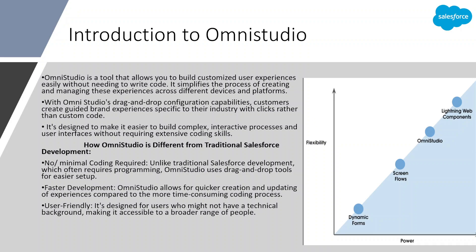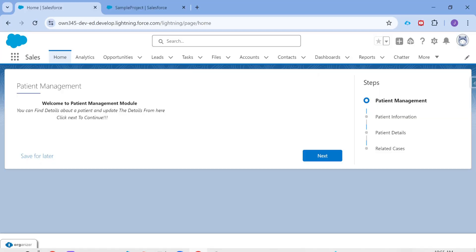The best way to understand what type of solutions Omni Studio can build is to see an example. Let's look at a module built using Omni Studio to understand how it can help us build solutions for our customers — just a note that it's a very basic example to show the look and feel, but Omni Studio can build much more complex solutions. There are always two approaches: this requirement could have been solved using LWC and Apex, or it can also be solved with low-code solutions such as Omni Studio.